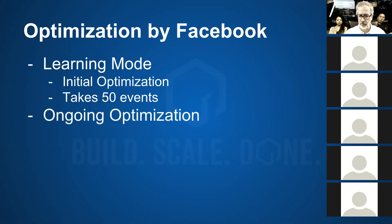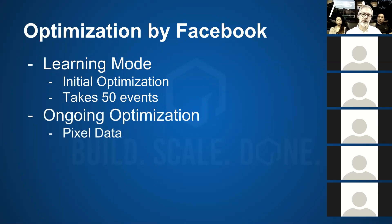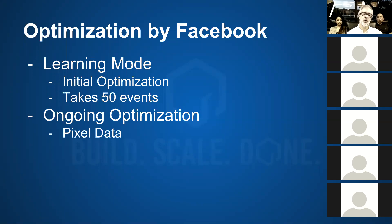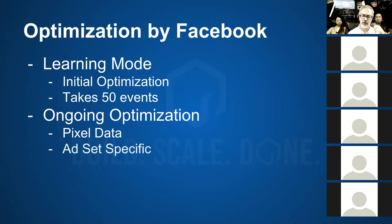Then there's ongoing optimization. For that, there's pixel data — that is the data that compounds on the pixel. The more you have going on, the more data you collect on the pixel, the more you get into your ad account, and the better experience you get with your ads, the more the pixel gets optimized and the better things turn.